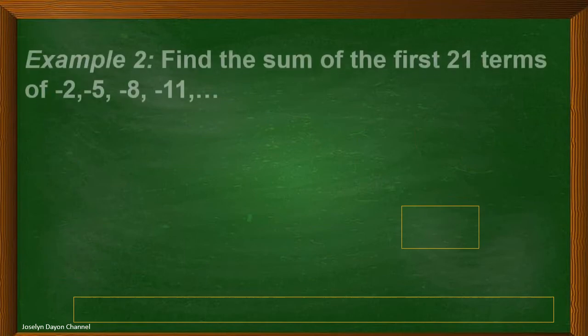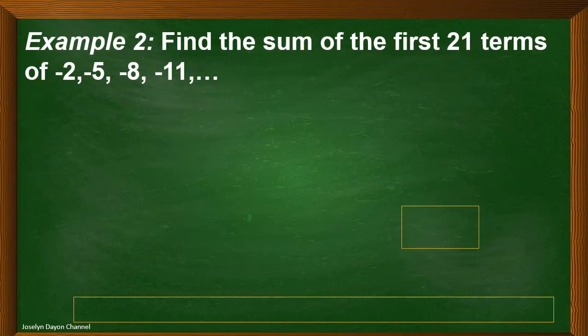Now let's consider the second example. Find the sum of the first 21 terms of negative 2, negative 5, negative 8, negative 11, and so on.